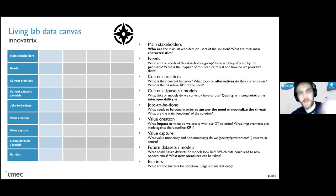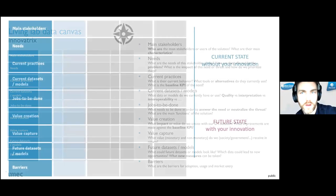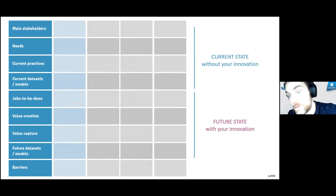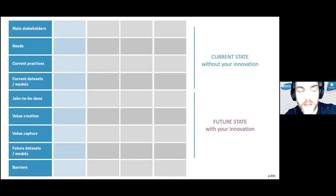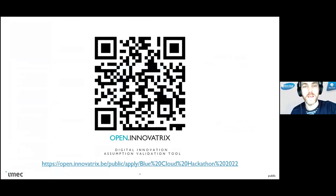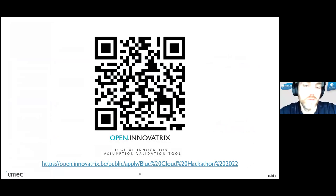Use this canvas step by step to apply the three elements of focus, differentiation, and coherence. The top four sections address the current state - what already exists - while the bottom sections address the future state - what you are designing in the hackathon. We also have a digital tool available online; you can access it via the link or QR code, register, and start using it immediately.